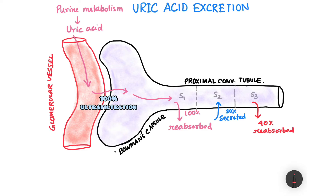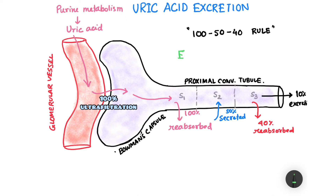So the remaining 10% that was there in segment three goes out for excretion. This rule is known as the 15040 rule. The renal excretion of anything is a result of filtration minus reabsorption plus secretion. In the case of uric acid: filtration is 100%, then 100% is reabsorbed, then 50% is secreted, and again 40% is reabsorbed. So finally we get 10% which is excreted out.